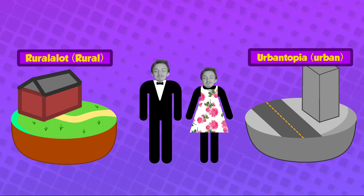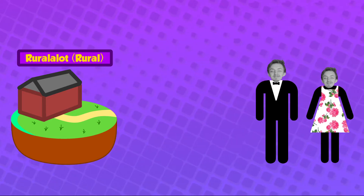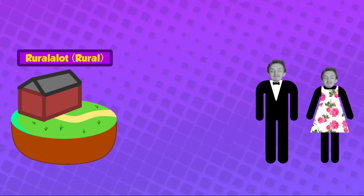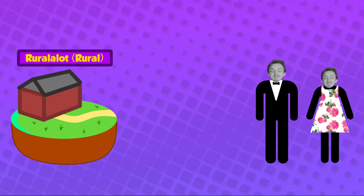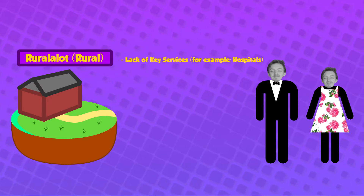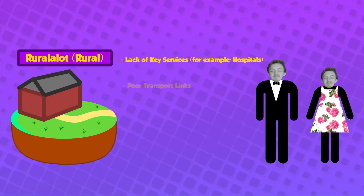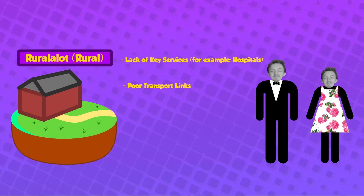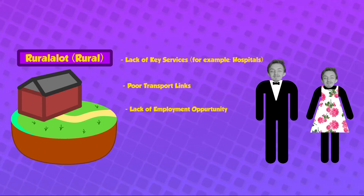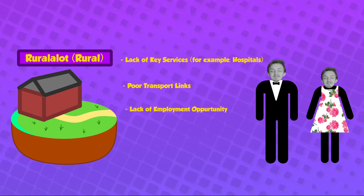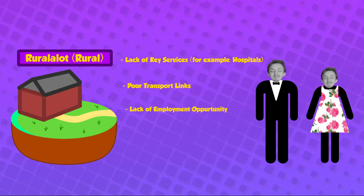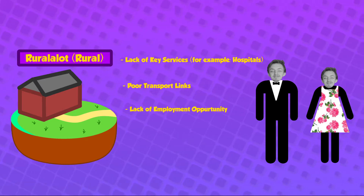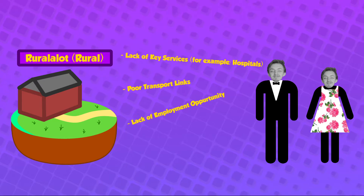The Bobbinsons found a range of push factors. These are factors that push you away from living in a certain area. In the case of Ruralot, there was a lack of key services like hospitals, poor transportation in the case of country lanes surrounding their village, and there are usually less employment opportunities — either there aren't many jobs or they aren't high paying.